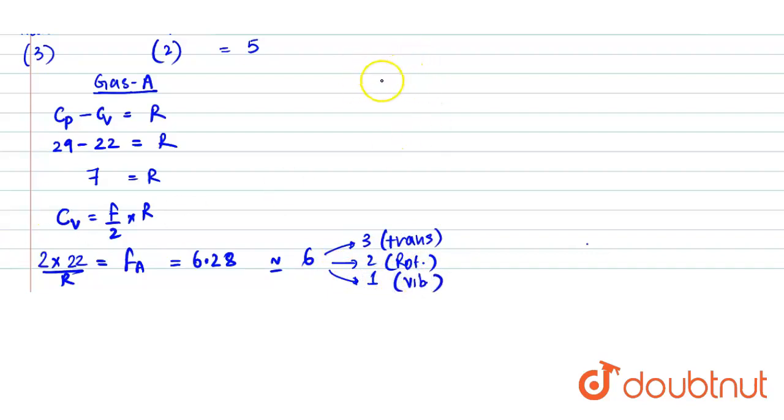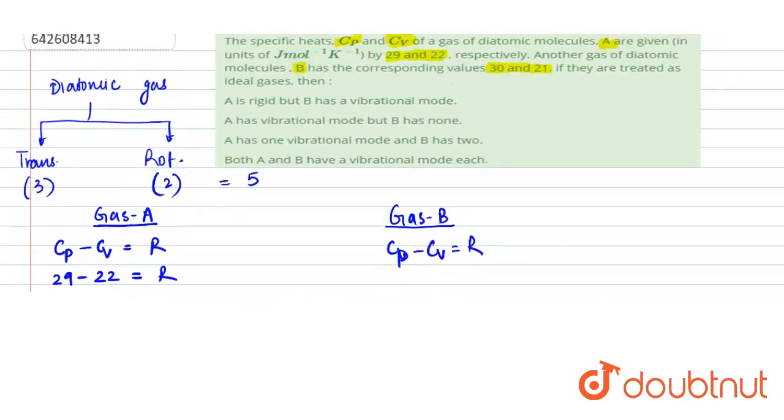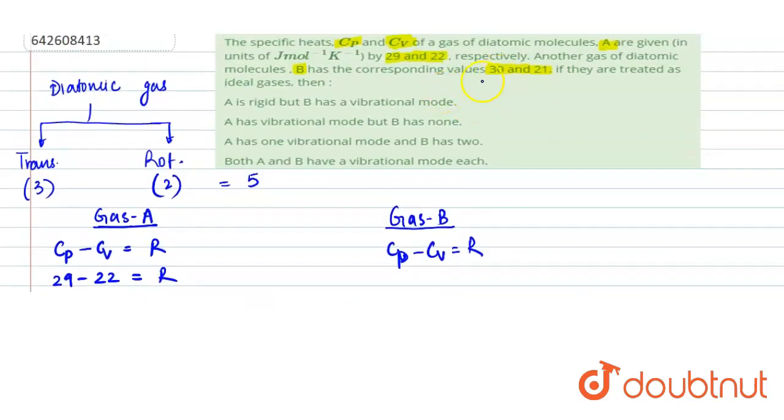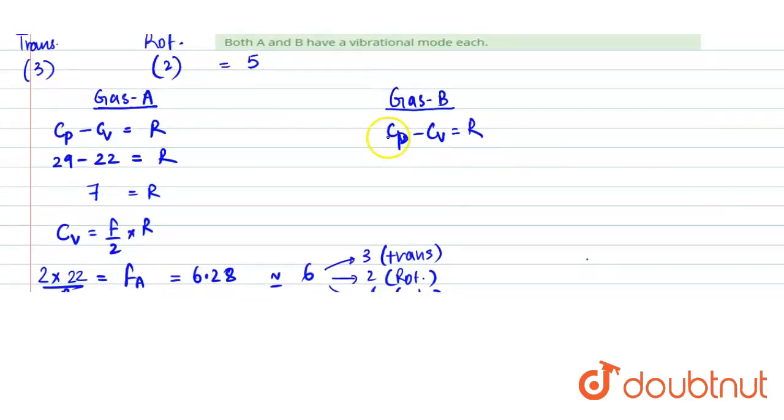Similarly, let's analyze the gas B. For gas B as well, we can write Cp minus Cv is equals to R. The Cp and Cv value are given to us as 30 and 21 respectively. So, 30 minus 21 is what R is. R value is 9.